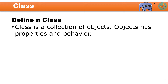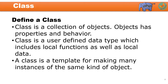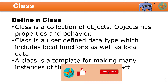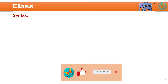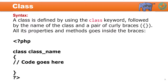Now let us put it in words. How will you define a class? A class is nothing but a collection of objects. Each object has its properties and behavior. Class is a user-defined data type which includes local functions as well as local data. In short, you can say a class is a template for making many instances of the same kind of object. Now let us see how the syntax of a class looks in PHP. It starts with the keyword class, then the class name, followed by curly braces, and all the properties and methods — meaning the characteristics and behavior — go inside the braces.